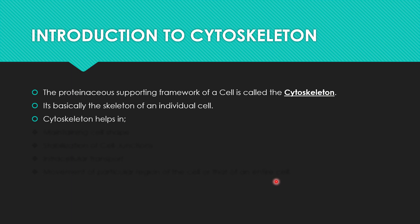In the human body, we have bones and cartilages as our supporting framework. Similarly, some individual cells also need a supporting framework in the form of proteins. This proteinaceous supporting framework of a cell is called the cytoskeleton.